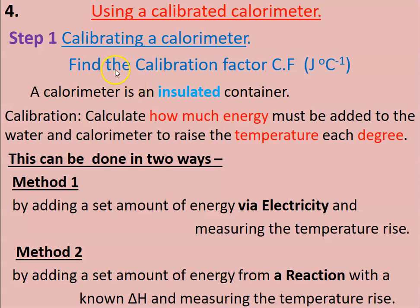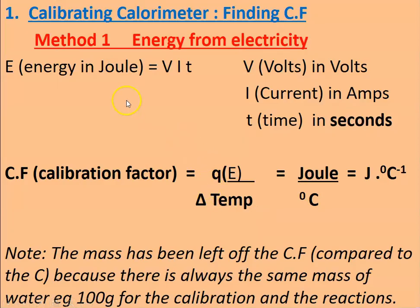Okay, so before we can use the calorimeter we have to calibrate it. This video is looking at Method 1: calibrating it using electricity. When we add electricity, we're going to measure the voltage, the current, and the time.